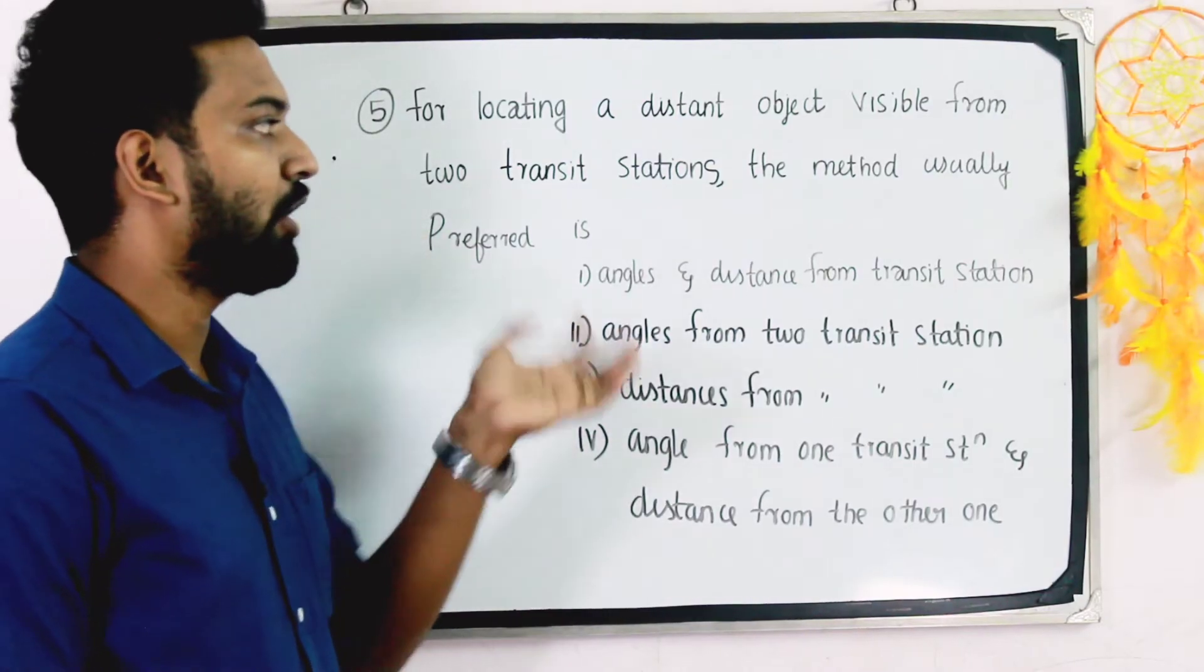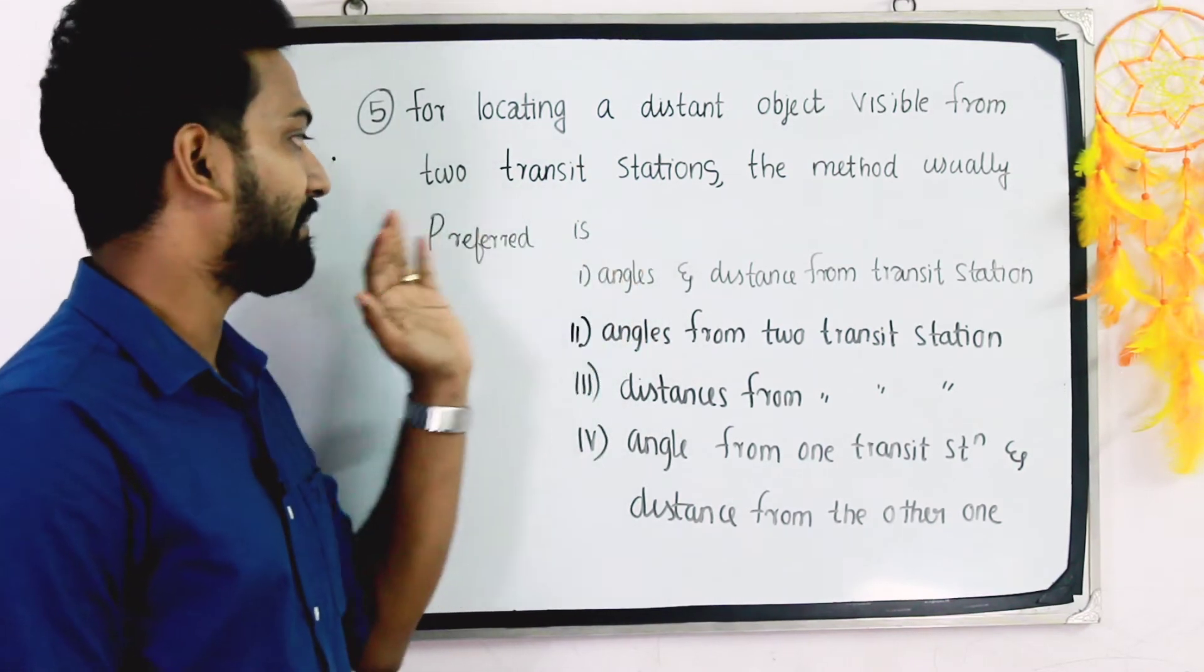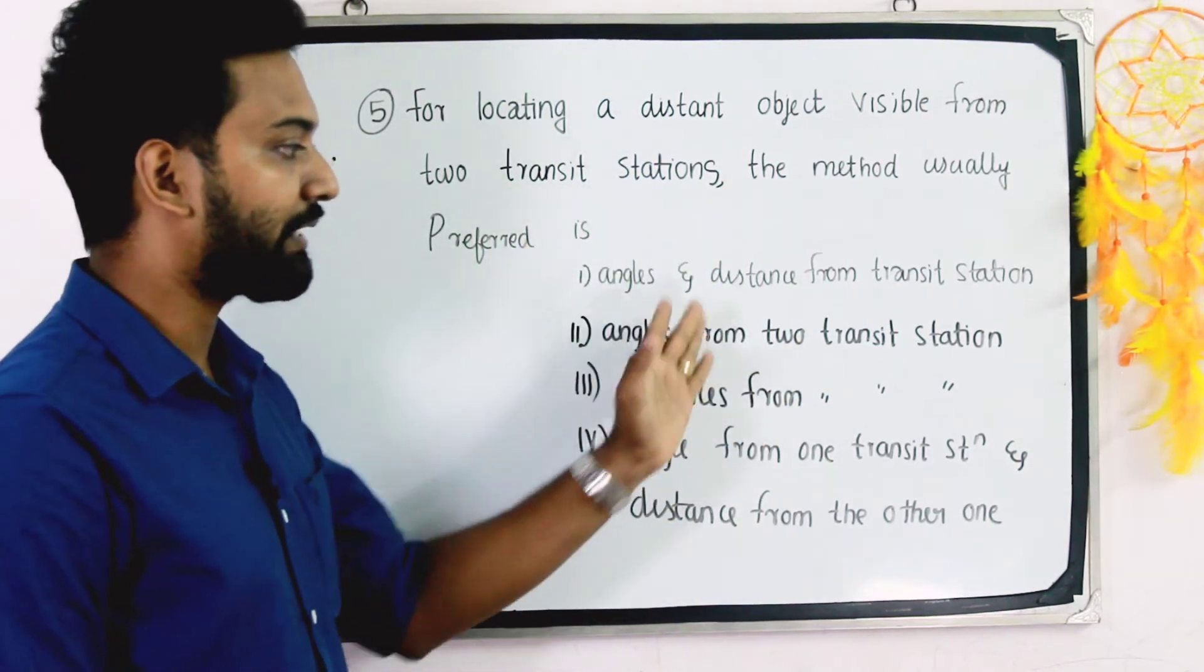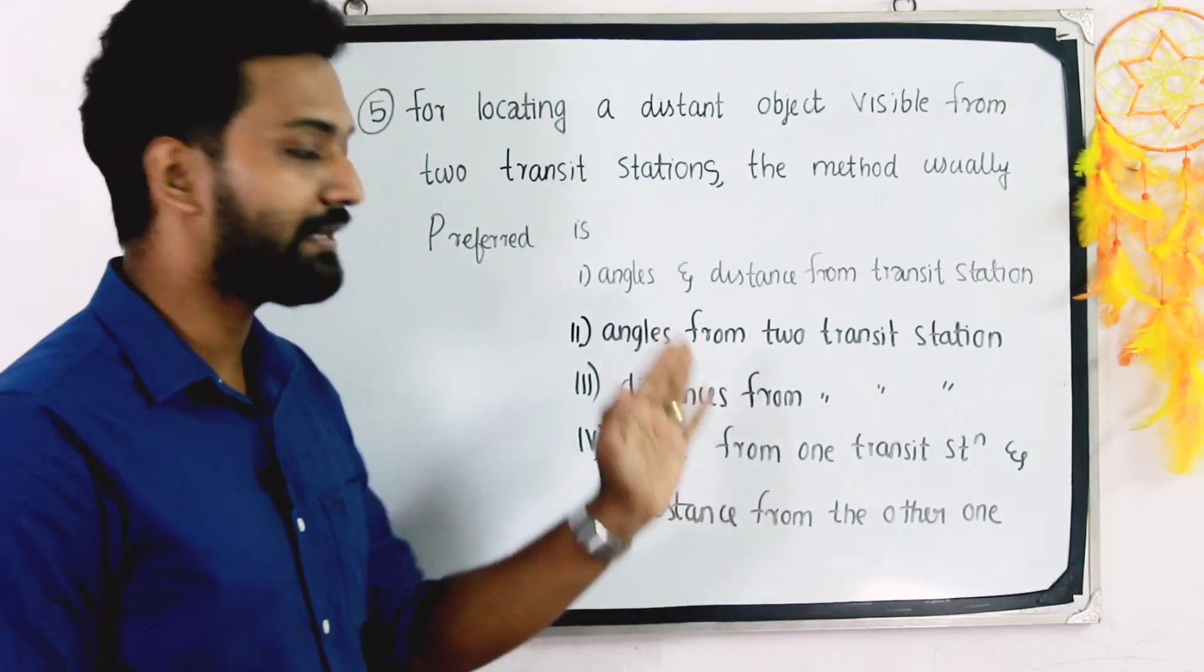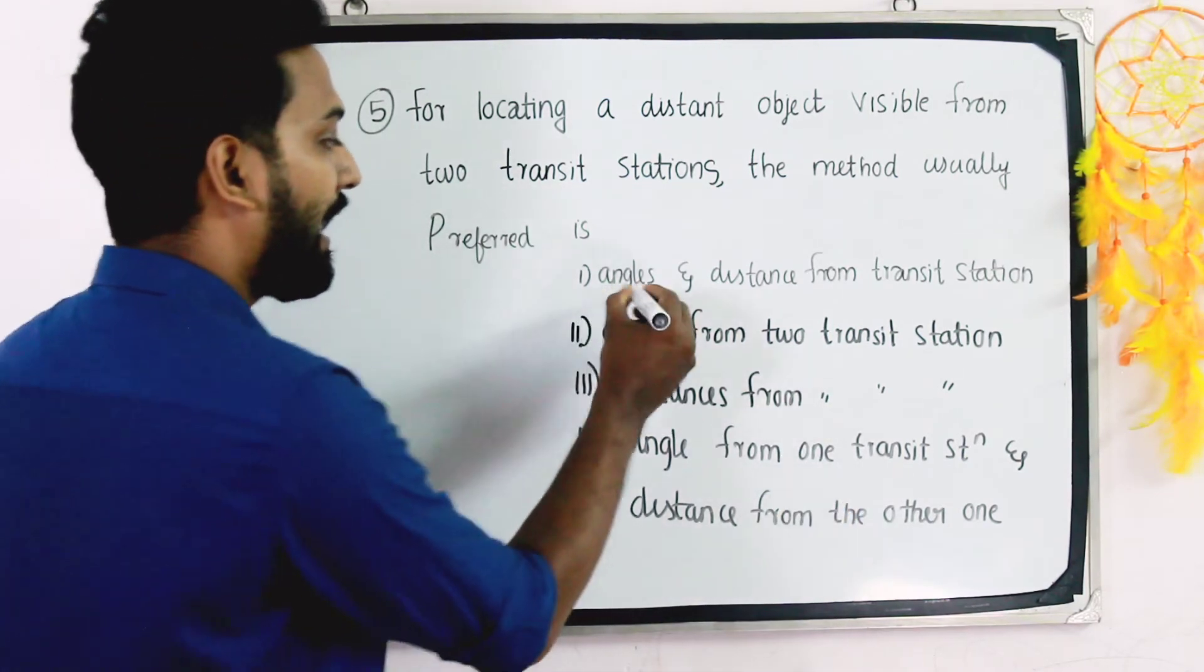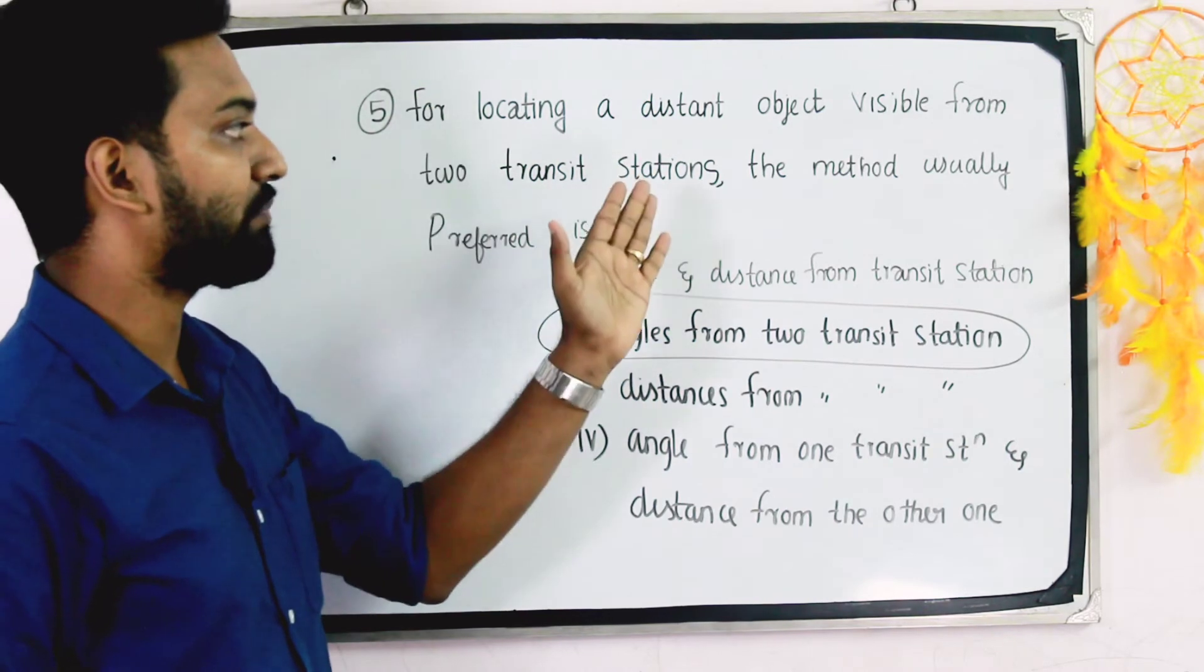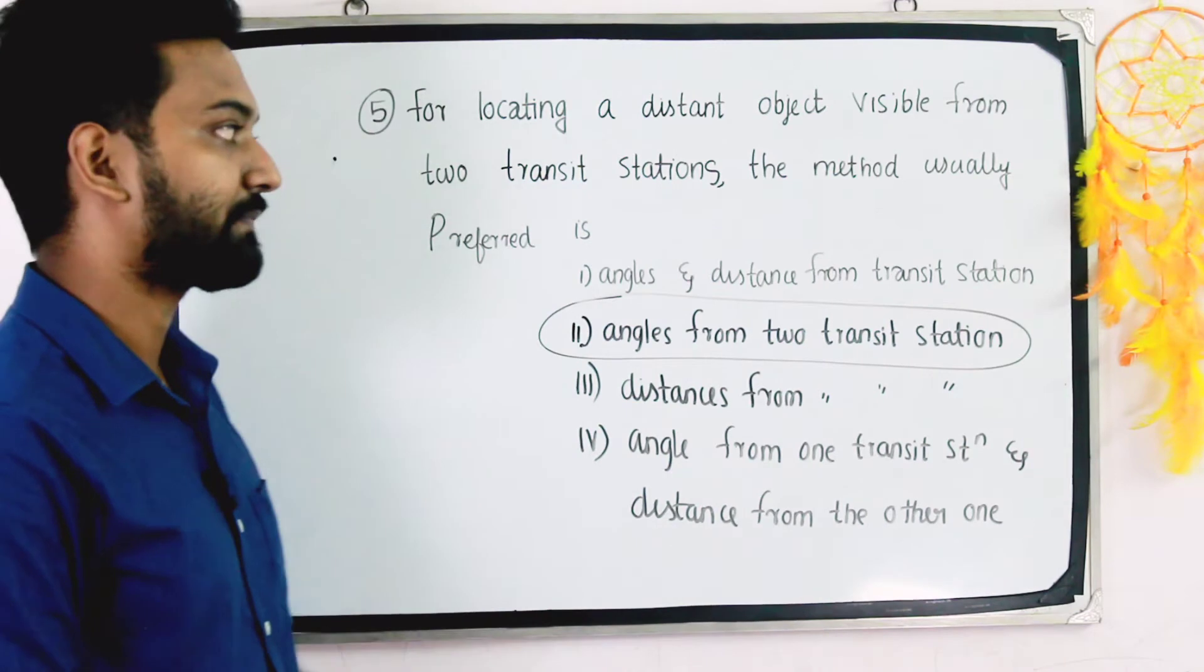For locating a distant object visible from two transit stations, the method usually preferred is angles from two transit stations.